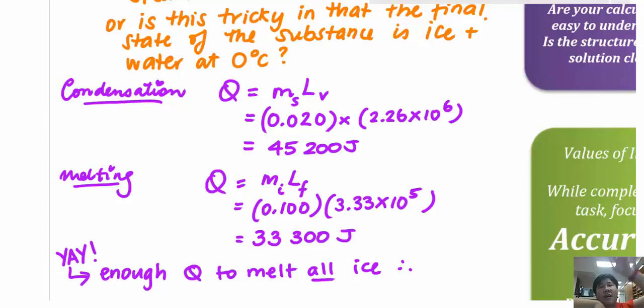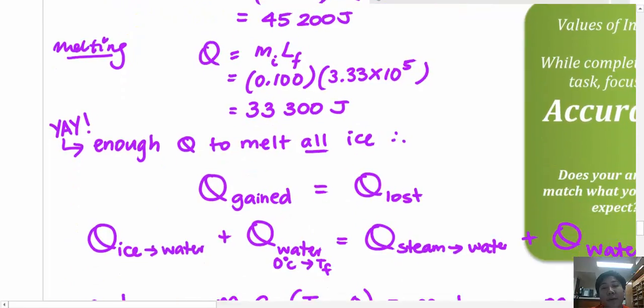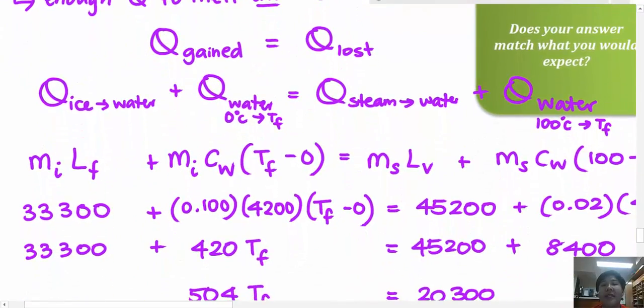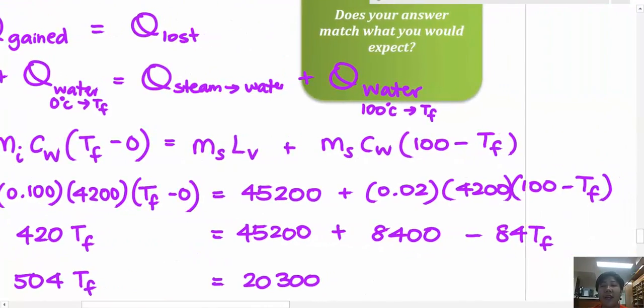So to solve the problem, I simply start off doing the same thing, which is Q gained equals Q lost. So that means on the gain side, I've got ice turning into water. That's a latent heat. I've also got water at zero degrees going up to a final temperature, which is the specific heat capacity part of the problem. And then on the other side, where I've got energy being lost, I need the steam to turn into water first, giving me the specific capacity calculation mSLV. And then I actually need the water that is now at 100 degrees to come down to a thermal equilibrium or final temperature that's consistent with where the water that came from ice got to. So that's my calculation there.